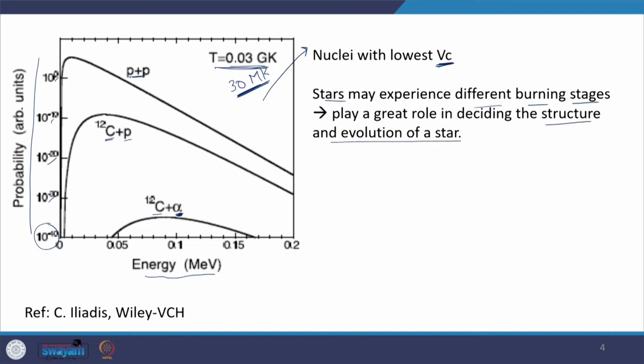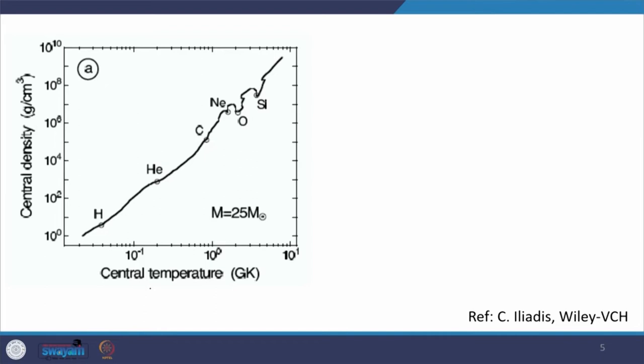This should provide enough information about the importance of different burning stages. The burning stage decides the structure and evolution of a star. In a star, if we plot central temperature on the x-axis and density at the centre on the y-axis, we can see circles representing hydrogen, helium, carbon, neon, oxygen, and silicon burning — representing the different burning stages at different temperatures, assuming a star of mass 25 times that of the sun.